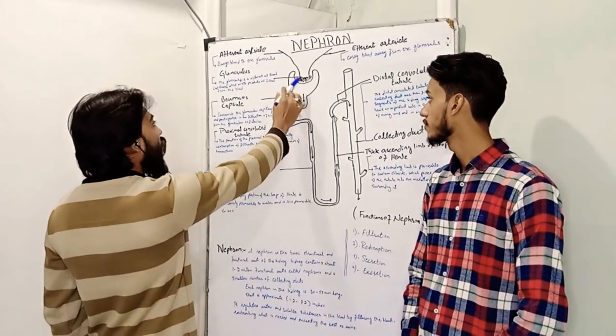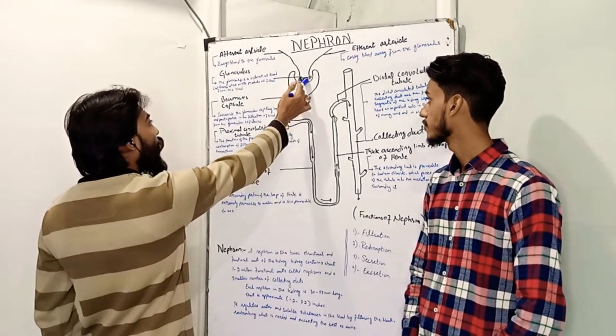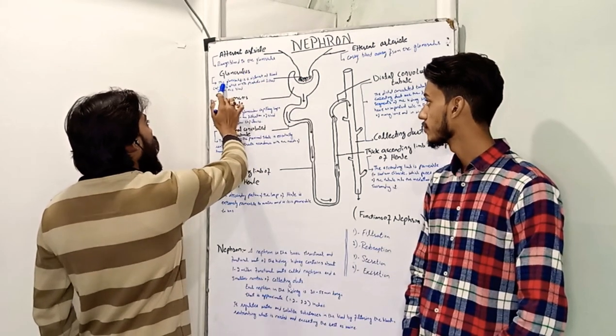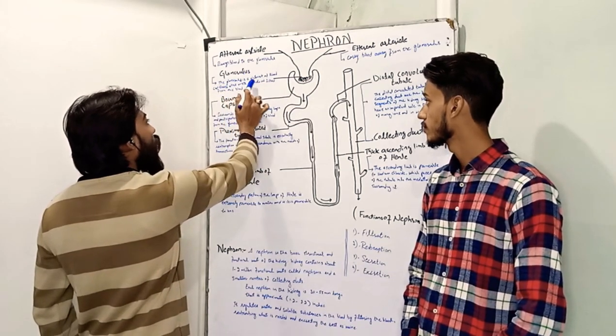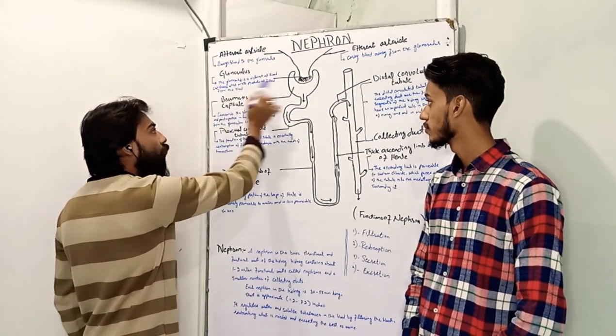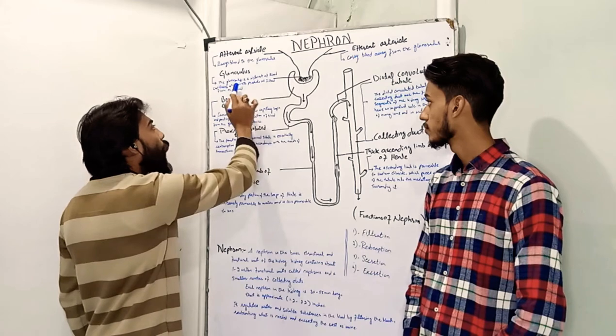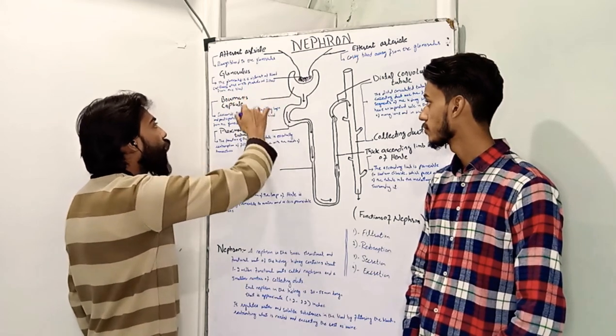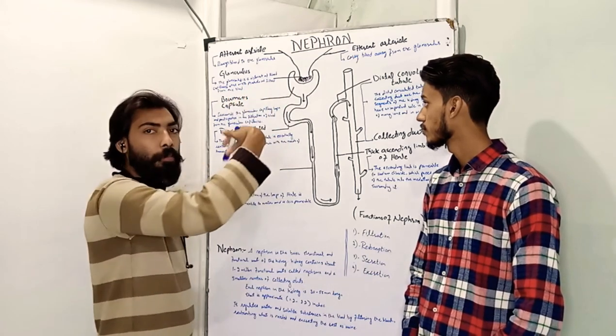This segment of the nephron is called the glomerulus. The glomerulus is a network of blood capillaries where waste products are filtered from the blood.